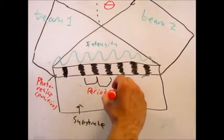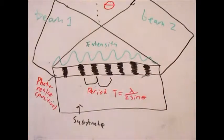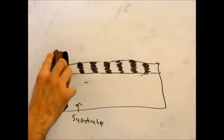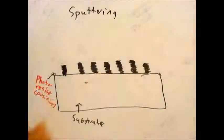By changing the angle between the two interfering beams, the period of the photoresist pattern can be altered. Also, by exposing once, rotating, and exposing again, 2D nanostructures can be formed. Once the photoresist structures are created,